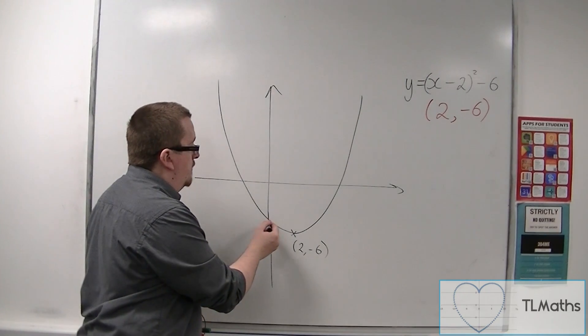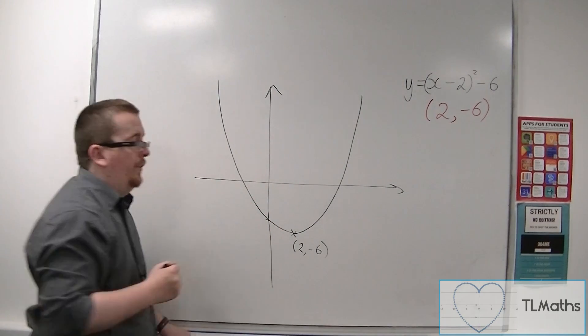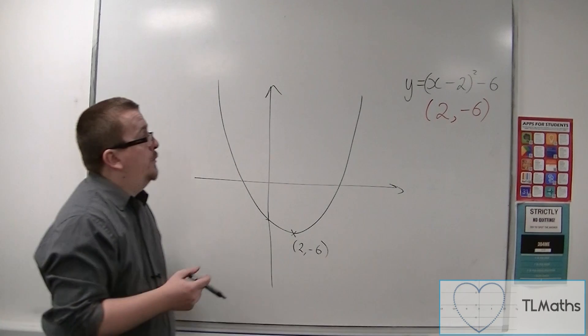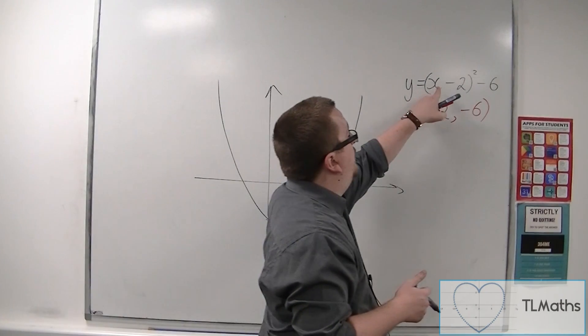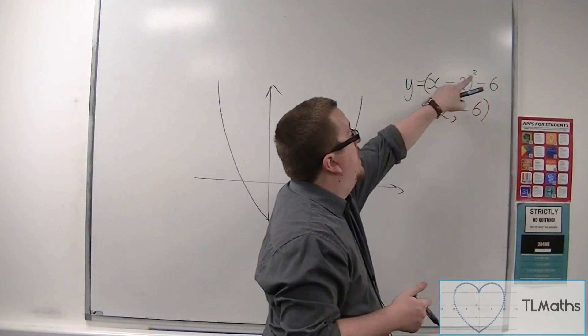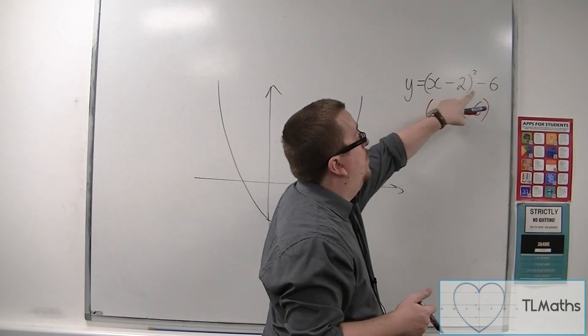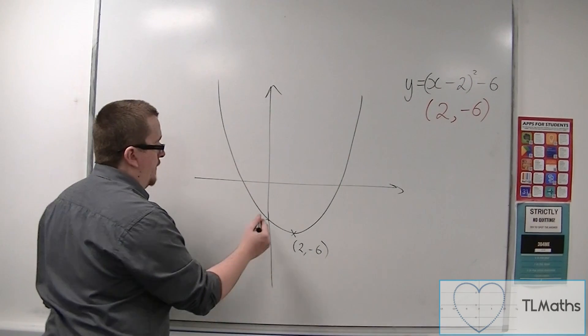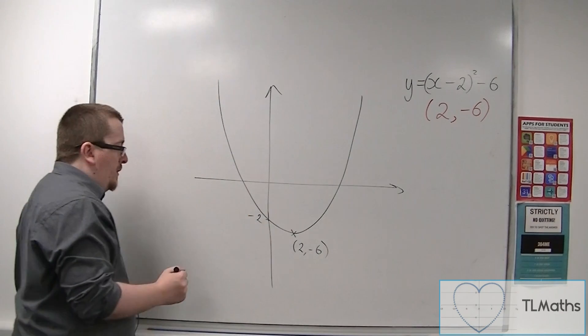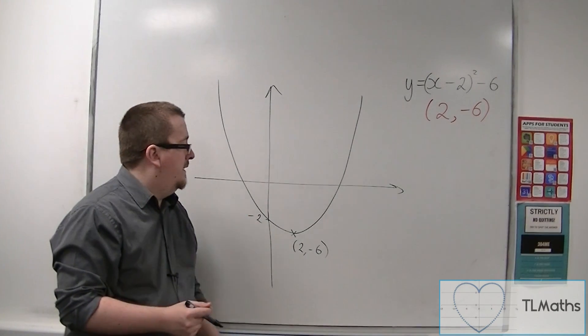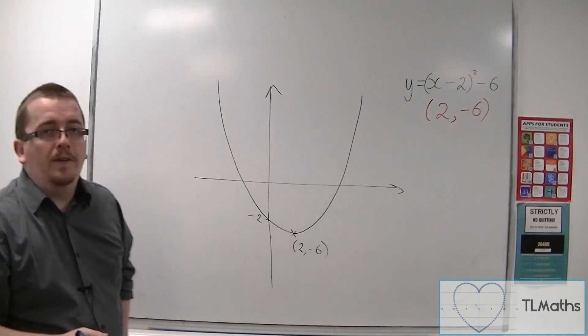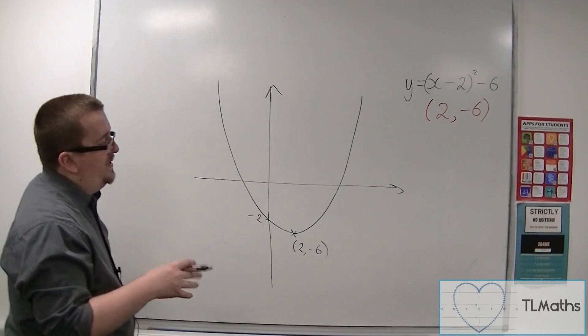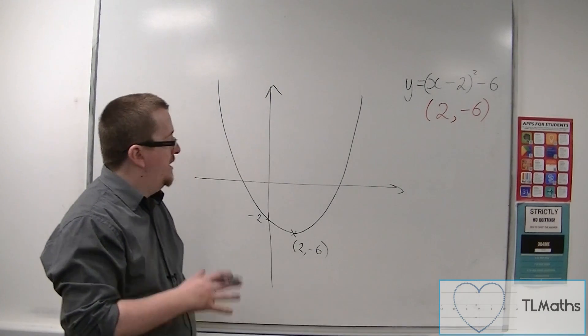And we can say where it crosses the y-axis if you like. That would be when x is 0. So we have 0 take away 2 squared, so that would just be 4, take away 6 would be minus 2. So just to get a little bit of scale in there. I know my curve isn't perfectly accurate, but we don't need to work with that at the moment.